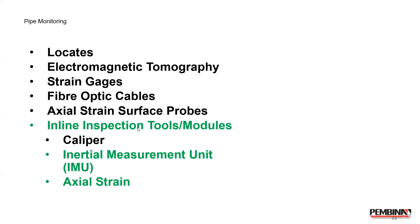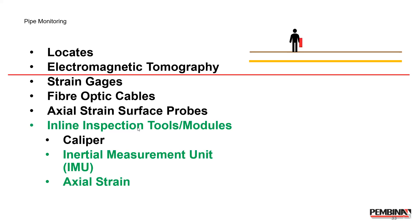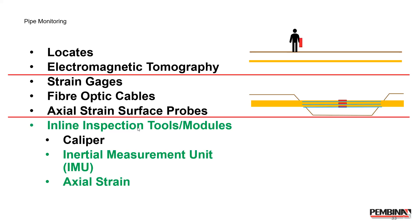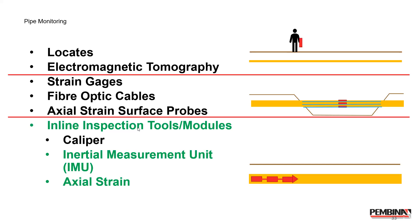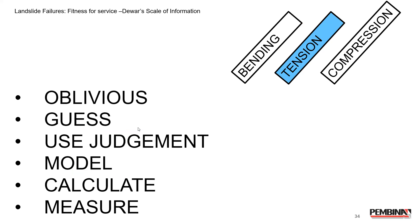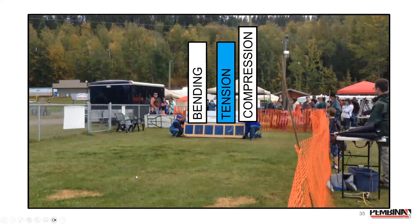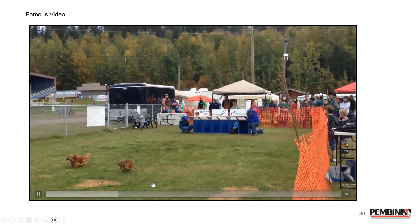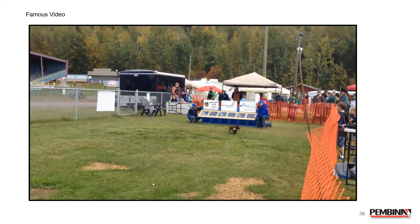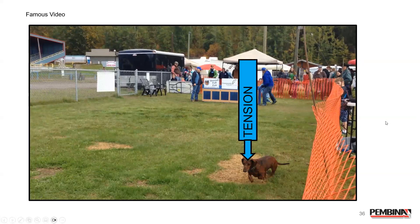For pipe monitoring, we can do locates, electromagnetic tomography, physically attach things to the pipeline to measure strain, or focus on inline inspection tools — which have evolved rapidly over the last couple of years. Looking at Dewar's scale of information — from oblivious all the way through to actually measuring things — the current state of the art: for bending, we're there; for compression, we're almost there; and for tension, we're lagging behind. The model is still in development and a couple of universities have expressed interest.